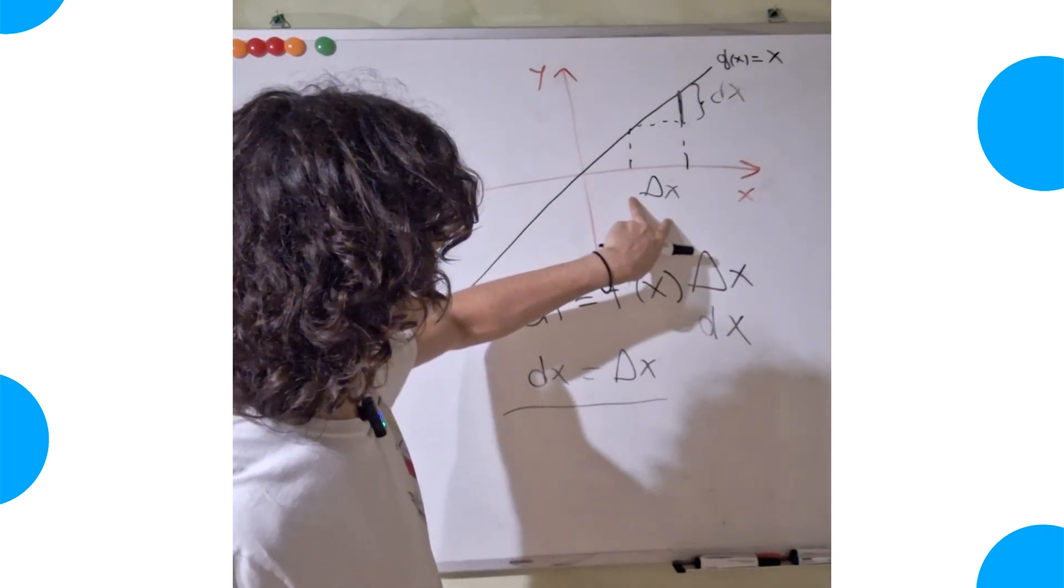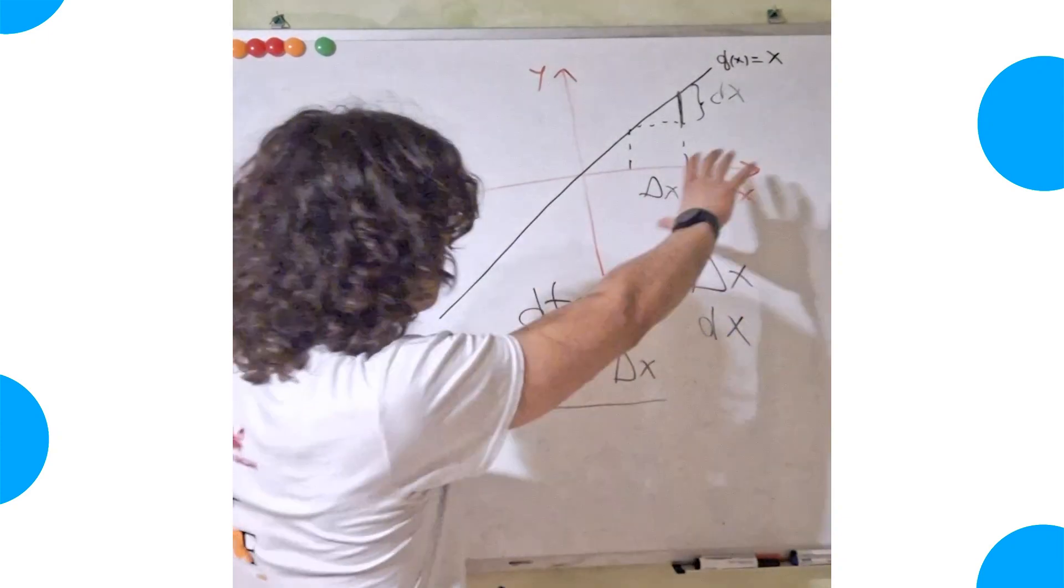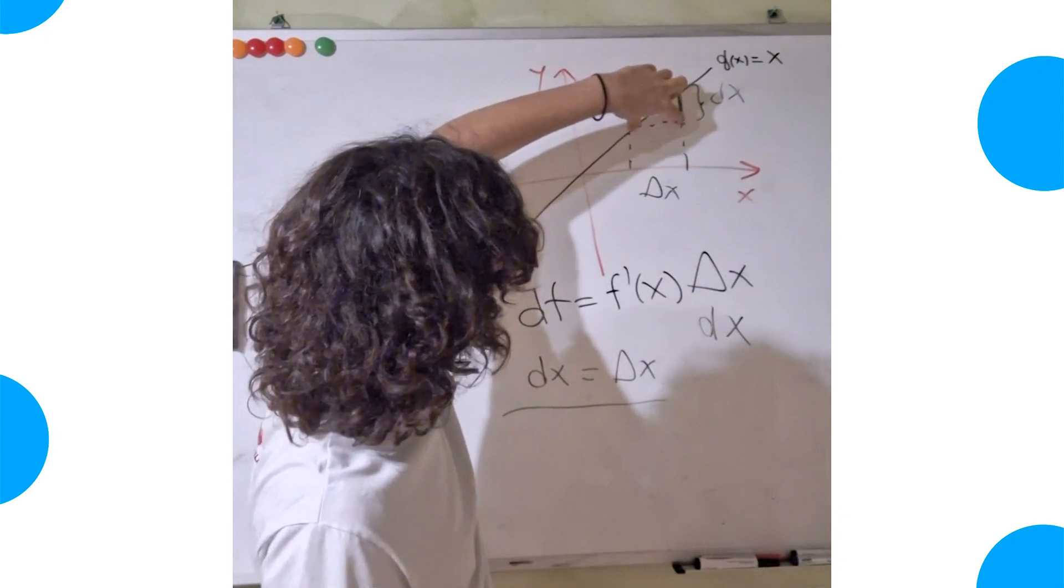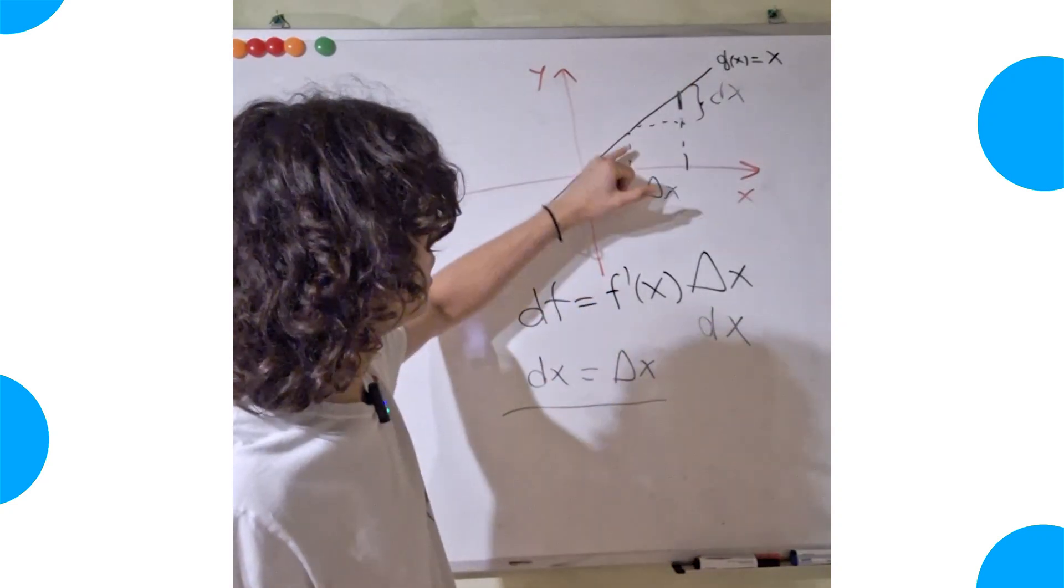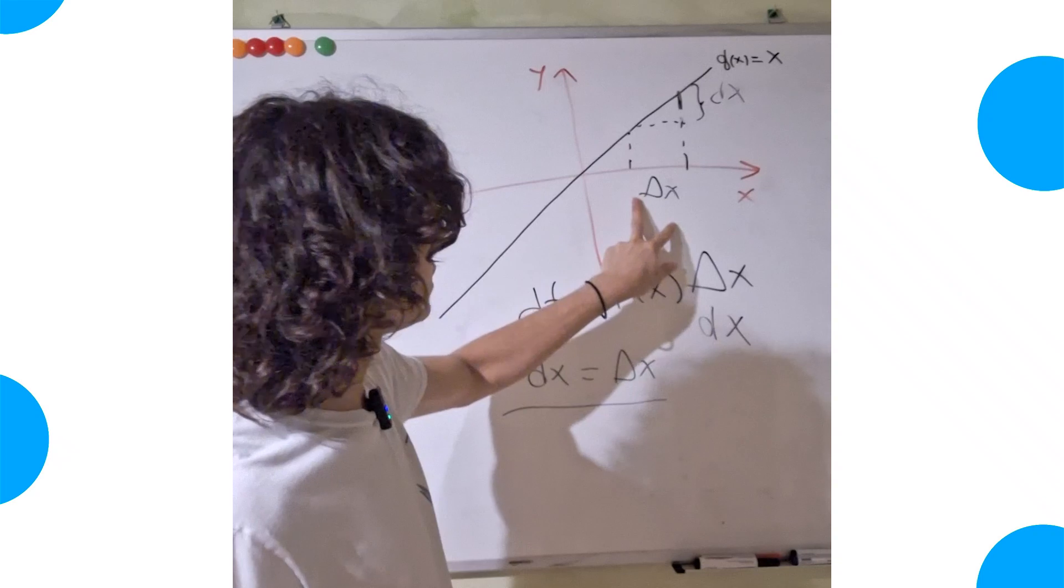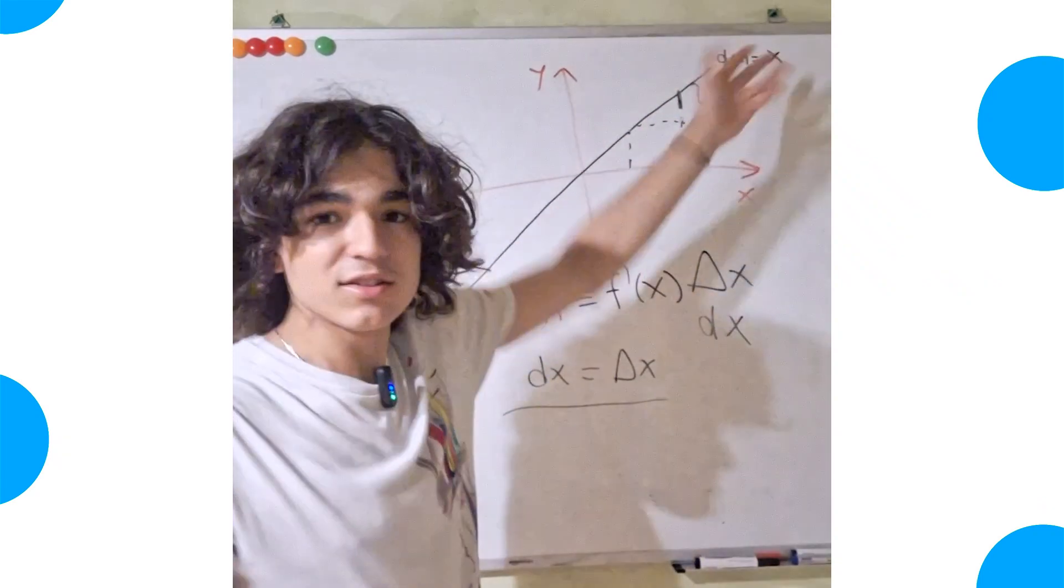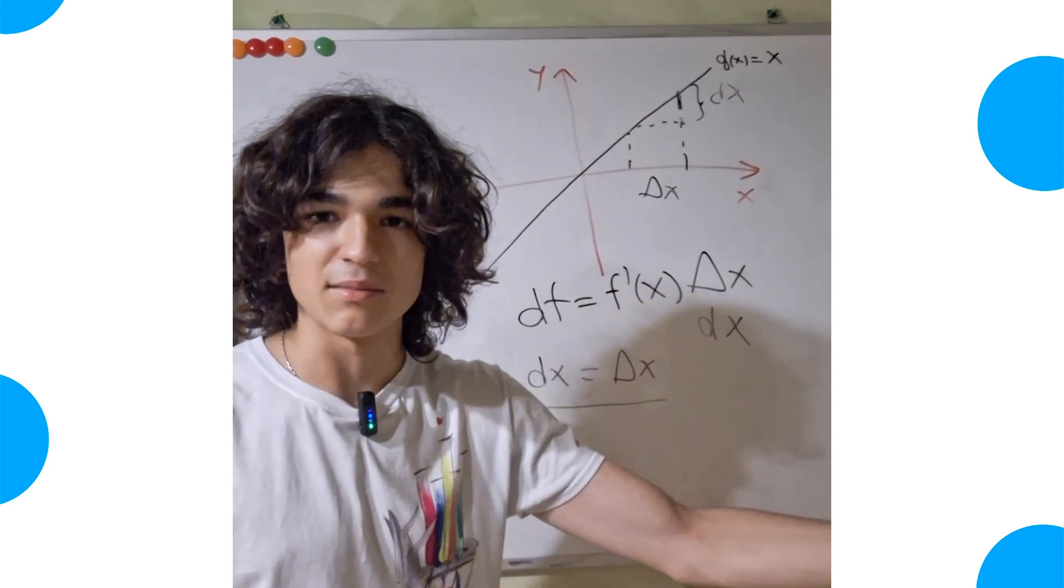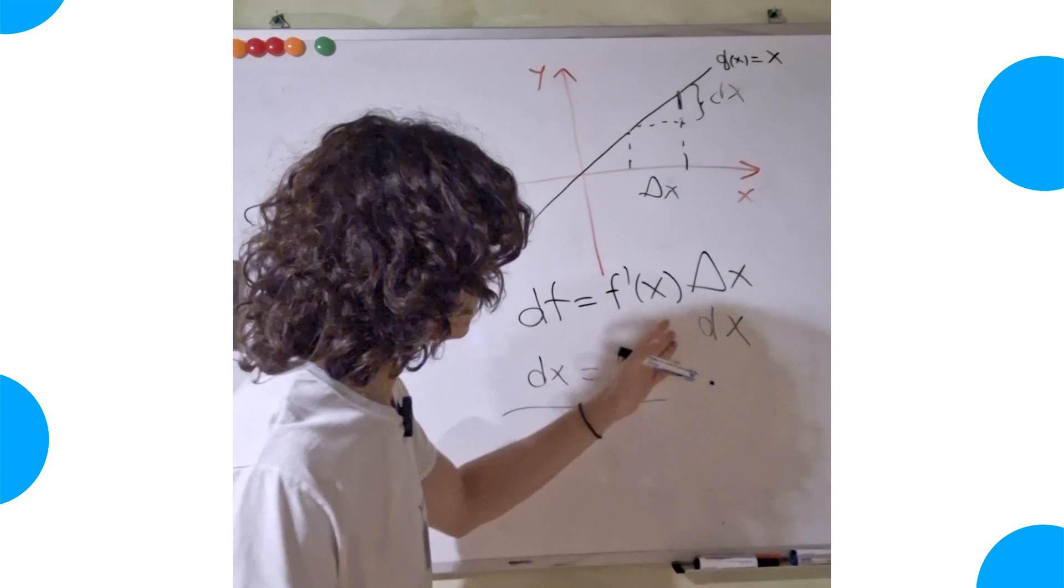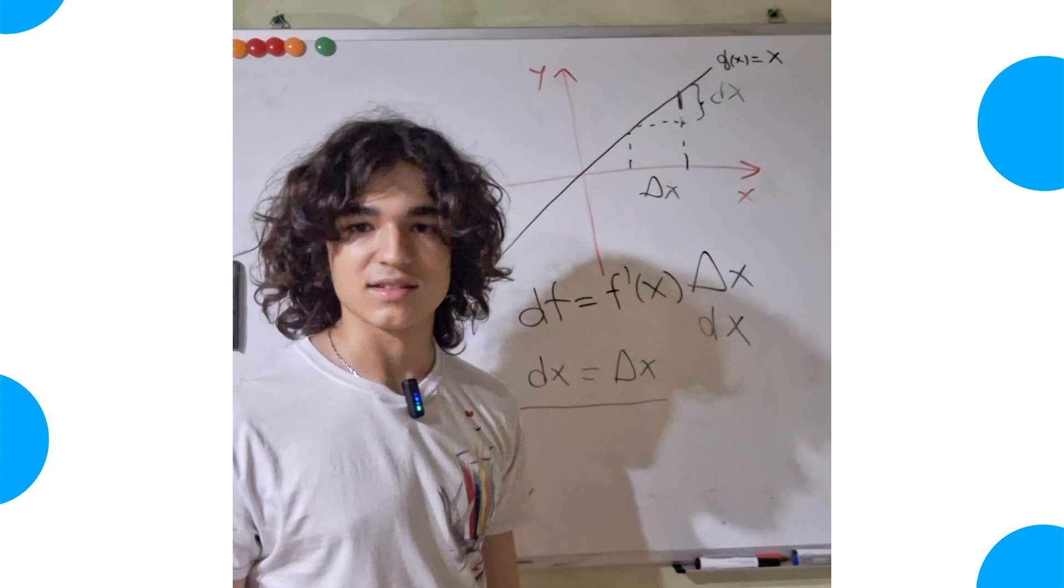And so talking about a finite difference, and the differential of that function is the same. It means that if we take a change here in x, the picture is not drawn perfectly, but this segment here should be equal in length to the segment here. So this finite difference, this increment in x equals the increment in the function, because this is also called the identity function. So that's the reason why df equals f prime of x times dx.